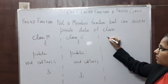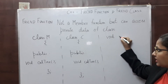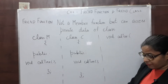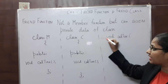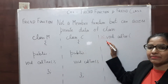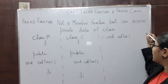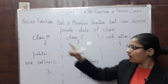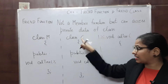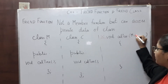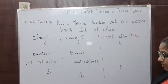So I will define void cal_tax as a normal C++ function. That means before void, I am not having any class name, scope resolution operator, or friend keyword — nothing. It is a normal C++ function. In the input arguments, I will pass two objects: one object of class M and one object of class C.